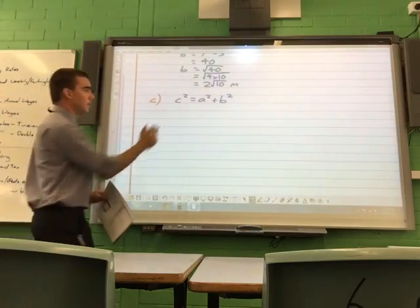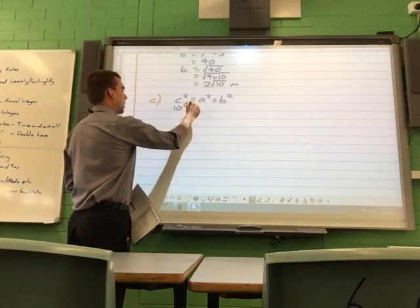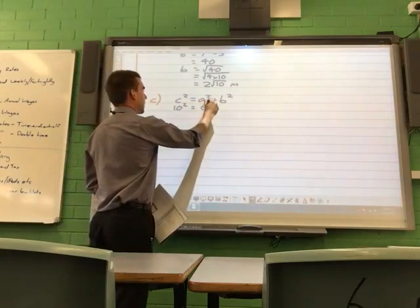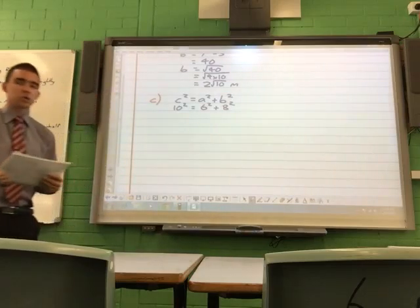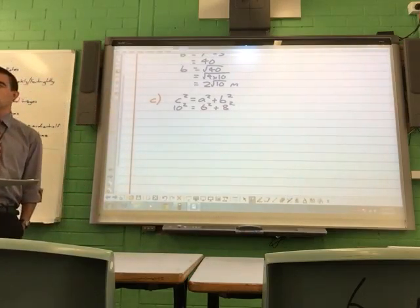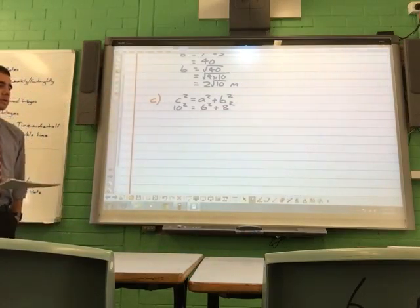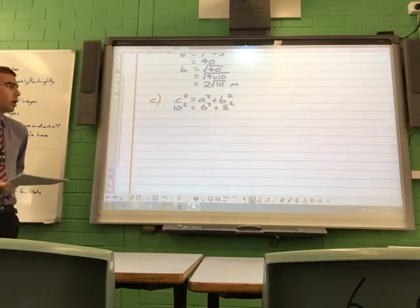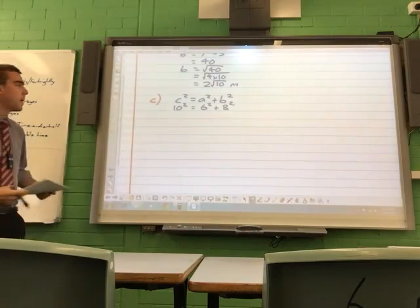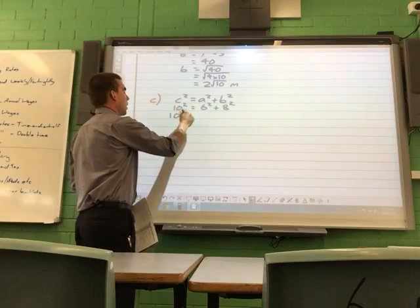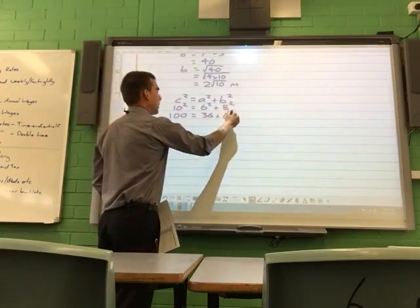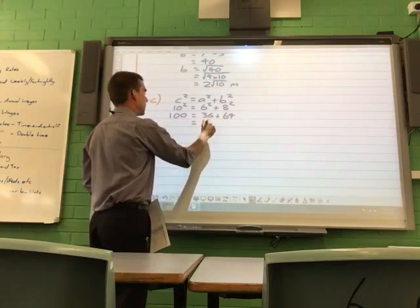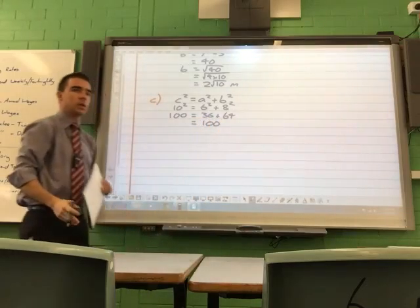So, c squared is a squared plus b squared. Okay, so we put the longest side for the hypotenuse, which is 10, and the other two shorter sides, so 6 squared plus 8 squared. We want to show that on both sides of the equal sign, we have the same number. If we do, Pythagoras theorem works, and we have a right angle. So, 100 equals 6 squared, 36 plus 8 squared, which is 64, and 36 plus 64 is 100.